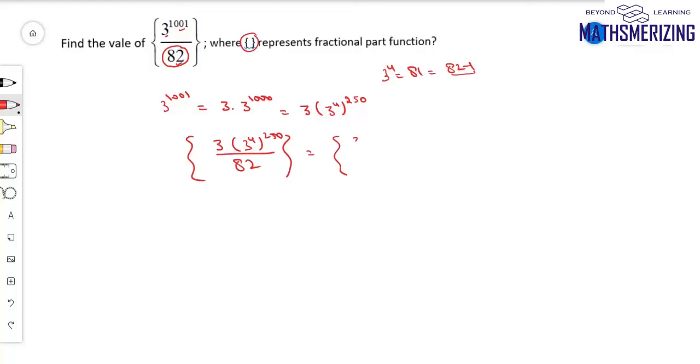That's 3 times, and 3 to the power 4 is 81, so I'll write it as 82 minus 1 to the power 250 divided by 82. Now I'll use the shortcut, leaving all the multiples of 82.